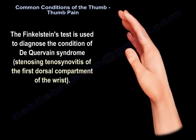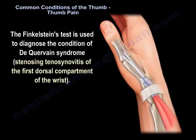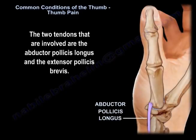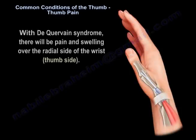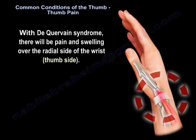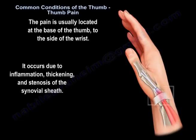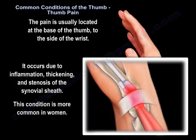De Quervain's syndrome is stenosing tenosynovitis of the first dorsal compartment of the wrist. It affects two tendons: the abductor pollicis longus and extensor pollicis brevis. The patient will have pain and swelling located over the radial, or thumb side, of the wrist — usually at the base of the thumb. It occurs due to inflammation, thickening, and stenosis of the synovial sheath, and the condition is more common in women.